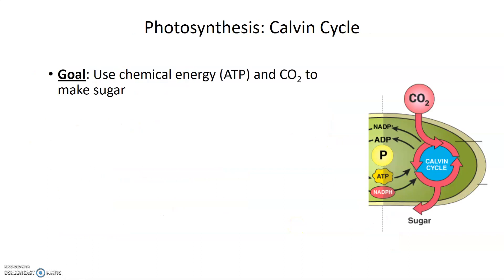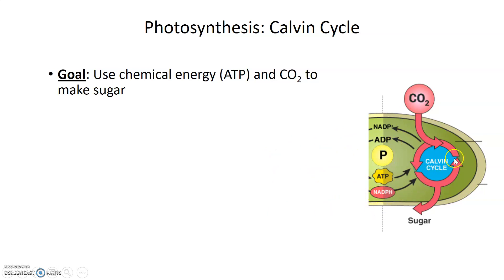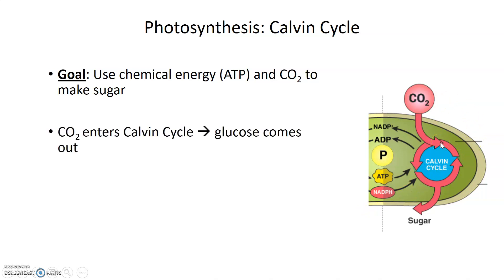What does the Calvin cycle do and why does it need energy? ATP as well as an electron carrier NADPH bring electrons and energy to the Calvin cycle. The Calvin cycle's main function is to convert carbon dioxide or CO2 into sugar. Since we're taking a one-carbon molecule and making a six-carbon molecule, this is basically an anabolic process. The output is glucose or sugar.